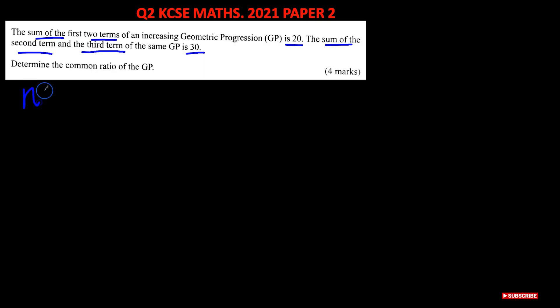If you know the formula, it says the nth term is given as a times r to the power n minus 1, where a is the first term, r is the common ratio, and n is the position of the term.